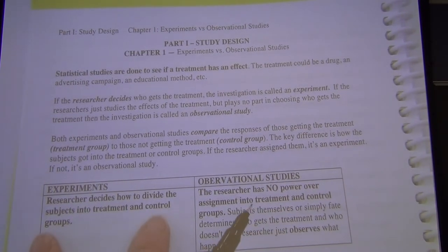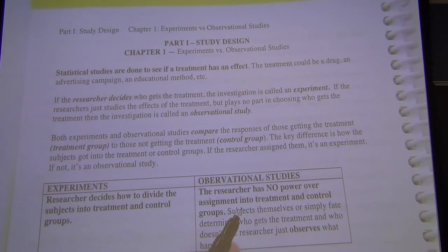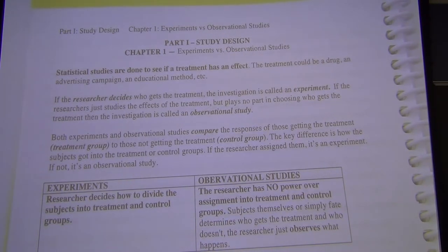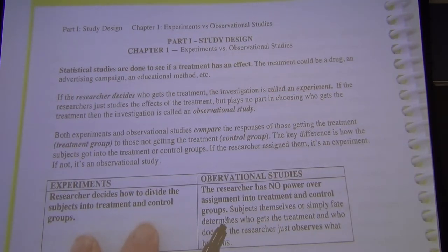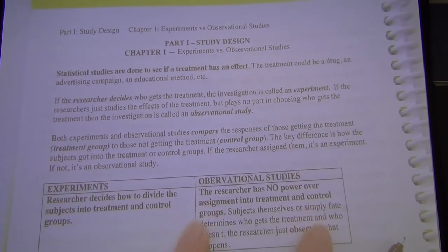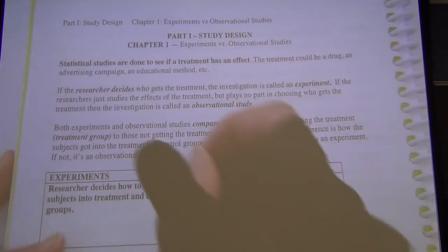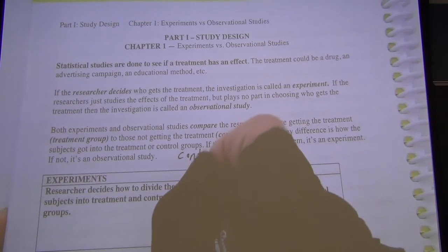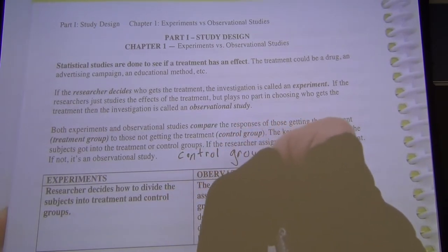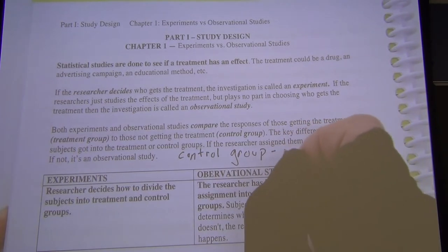Even when comparing two treatments — like in-person versus online class — one is labeled treatment and one control. In statistics, a control group is just a comparison group. Assignment to treatment and control can be done either randomly or non-randomly.